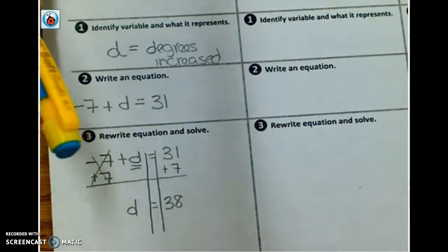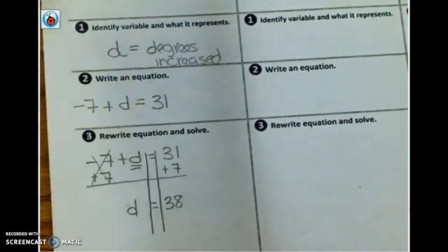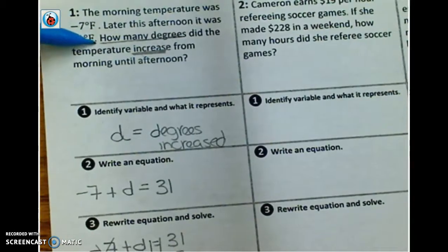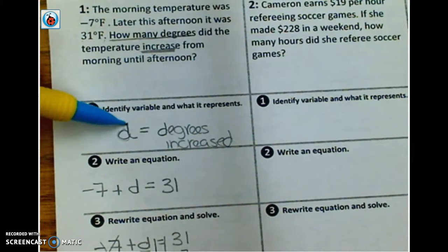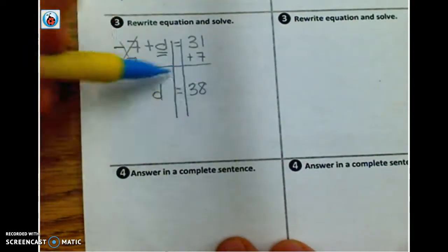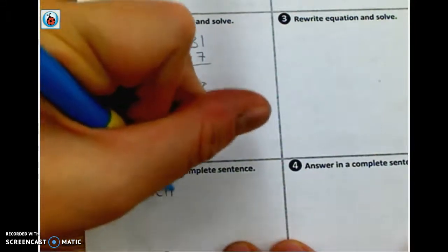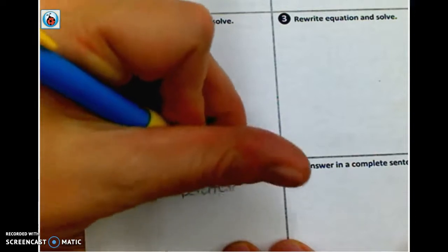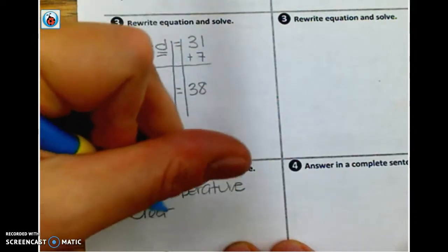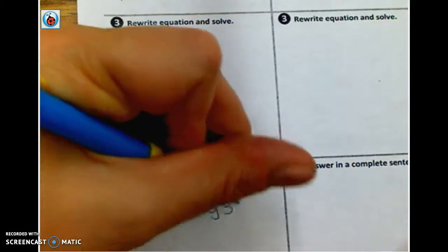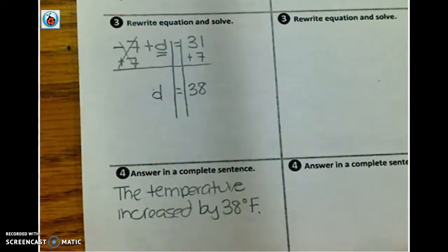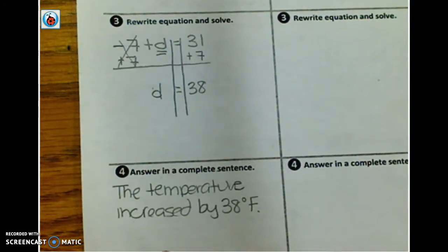Well, we want to take that number and what this means and answer our question. Go back to your question. It said, how many degrees did the temperature increase? And we said that D was going to represent the degrees increased. So we're just going to basically translate the meaning of this right here. So the temperature increased by 38 degrees. Okay? So those are the different components for writing and solving a one step equation with your word problems. Alright? Let's go ahead and take a look at the second problem.